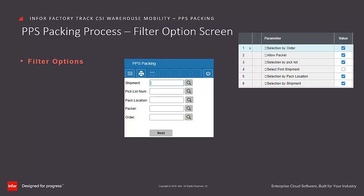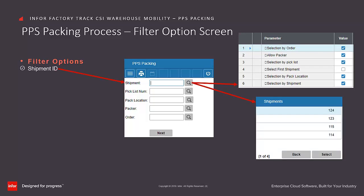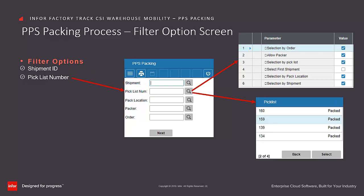The PPS Packing process is initiated by determining which picklist to use. FactoryTrack offers several options to allow the user to search for the picklist to process. The Shipment ID field is made available if the Selection by Shipment field is selected in the transaction set maintenance form. You can enter, scan, or search from a list of shipments available for packing. The most commonly used filter is the picklist number, which is made available when the Selection by Picklist option is selected in the transaction set maintenance form.